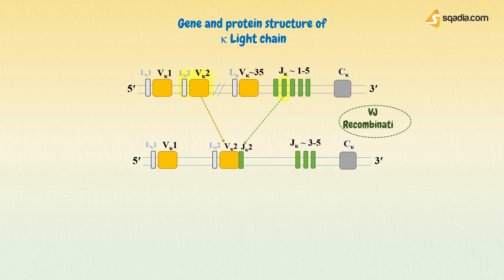The intervening DNA — in this example from approximately the end of V3 to the end of J2 — is deleted by looping it out and cleaving it for ultimate degradation. Although the developing B cell has a large number of V genes, or exons, and, to a lesser extent, J genes, each B cell uses only one of the V genes and one of the J genes.